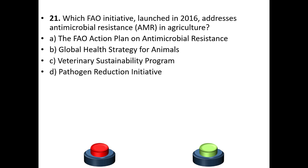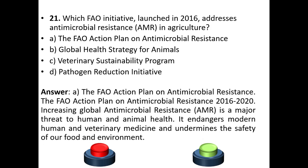Question 21: Which FAO initiative launched in 2016 addresses antimicrobial resistance in agriculture? a) The FAO Action Plan on Antimicrobial Resistance, b) Global Health Strategy for Animals, c) Veterinary Sustainability Program, or d) Pathogen Reduction Initiative. The answer is option A — the FAO Action Plan on Antimicrobial Resistance. The 2016–2020 plan recognized that increasing global antimicrobial resistance is a major threat to human and animal health, endangering modern medicine and the safety of our food and environment.